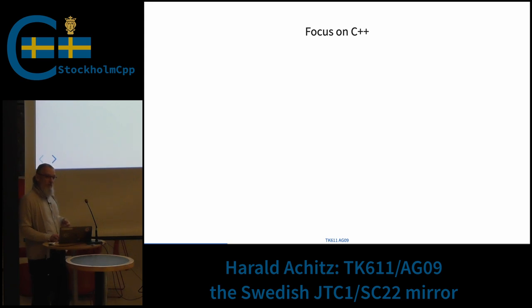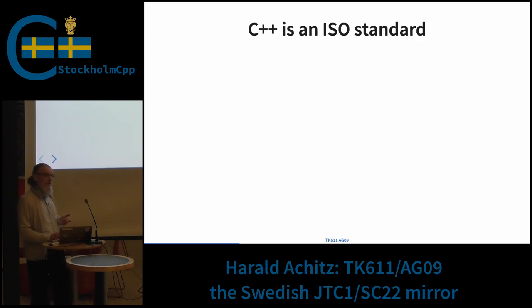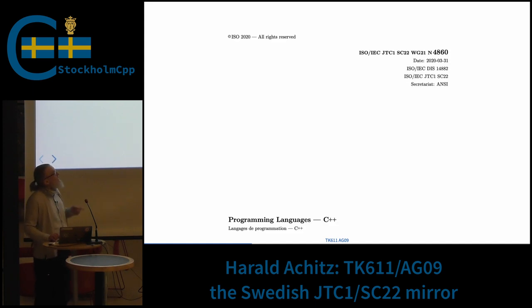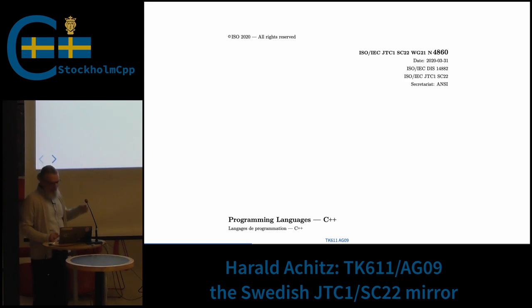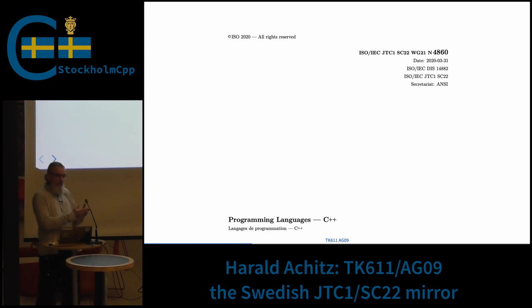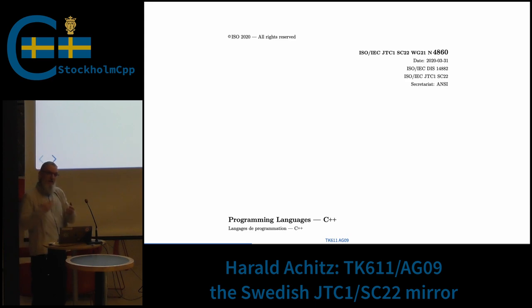Let's focus a little bit on C++. You might know that C++ is an ISO standard. And what does this mean? It means basically the outcome of the C++ standardization is a PDF. And compiler vendors can take this PDF and implement their compilers and the standard library to be standard-conformant.